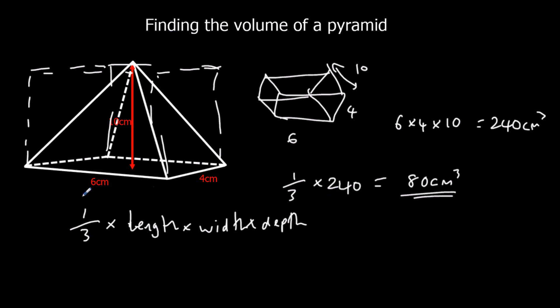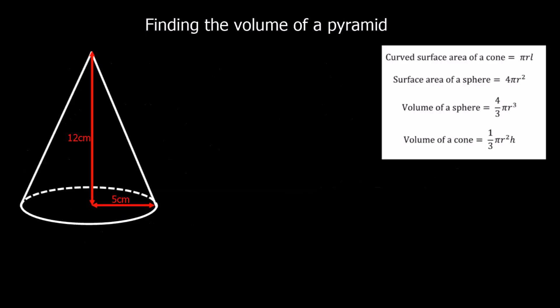There's actually an easy way to remember it's one third by looking at the formula book, because in the formula book they tell us the volume of a cone. And that one third is right there in front of, this is the area of a cylinder.